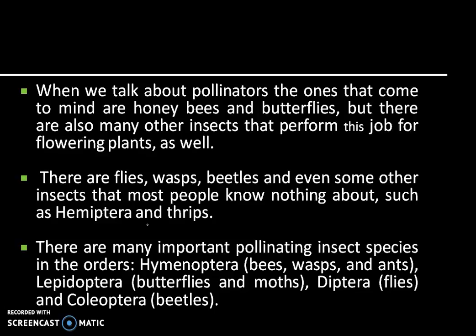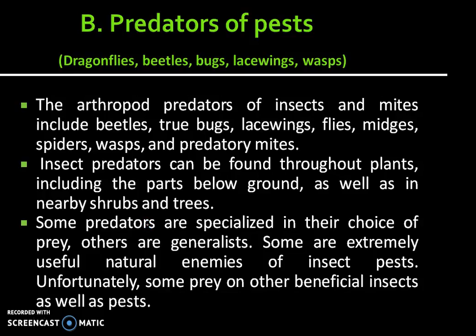But there are also many other insects that perform this job for flowering plants — flies, wasps, beetles, and even some insects that most people know nothing about, such as Hemiptera and Thrips. There are many important pollinating insect species in the order Hymenoptera, which includes bees, wasps, and ants. Lepidoptera includes butterflies and moths. Order Diptera includes flies, and Coleoptera includes beetles.